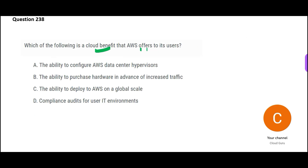Now, which of the following is a cloud benefit that AWS offers to its users? One benefit that stands out is AWS on a global scale — that would be my answer. AWS globally has data centers in so many countries, states, and cities, which is unmatched. You can get very good service, low latency, and high performance anywhere in the world.